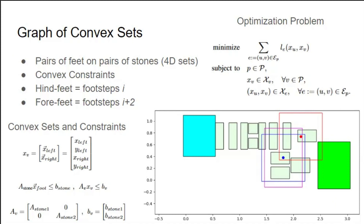Our convex constraints are shown in the picture. They're essentially how far we can step, as well as how far feet can be away from each other. For certain situations, you can also enforce things like the left foot being to the left of the right foot, etc., to help make planned trajectories physically feasible. To go from 2 feet to 4, simply select future steps as forelegs and past steps as hind. This is necessary because the 8D set version is extremely computationally expensive.